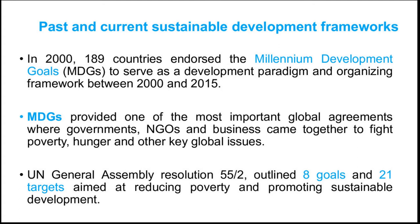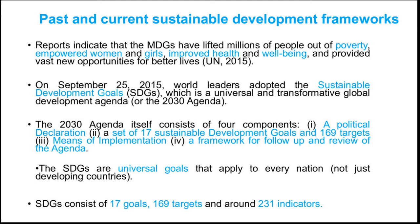The United Nations General Assembly Resolution 55/2 outlined eight goals and 21 targets aimed at reducing poverty and promoting sustainable development. So MDGs consisted of eight goals and 21 targets. Reports indicate that MDGs lifted millions of people out of poverty, empowered women and girls, improved health and wellbeing, and provided vast new opportunities for a better life. The UN report indicated that there were substantial achievements with regard to MDGs.